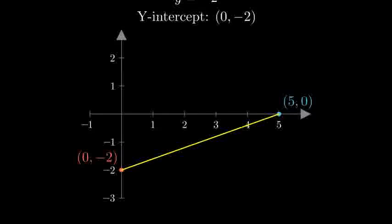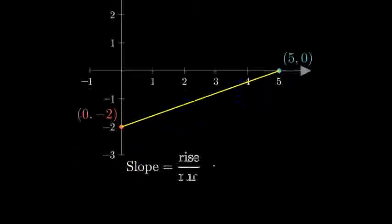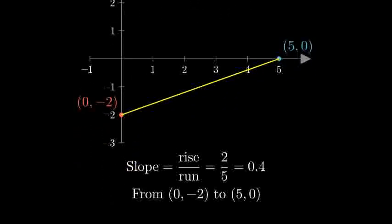Let's verify our line is correct by testing another point. We can find the slope using our two points. The slope equals rise over run, which is 2 divided by 5, or 0.4.